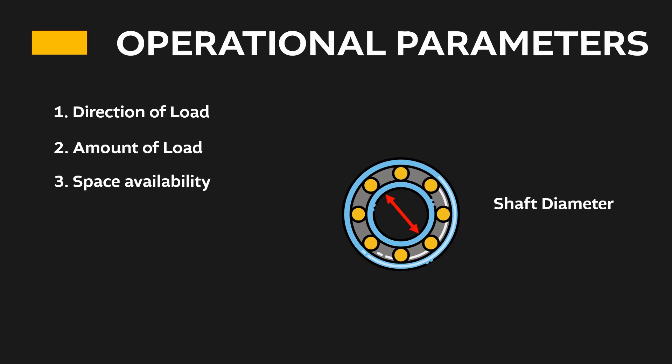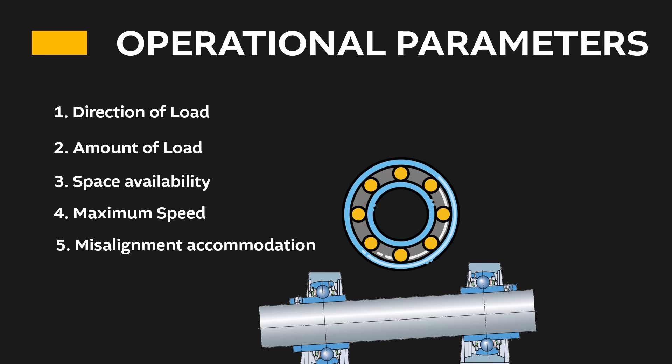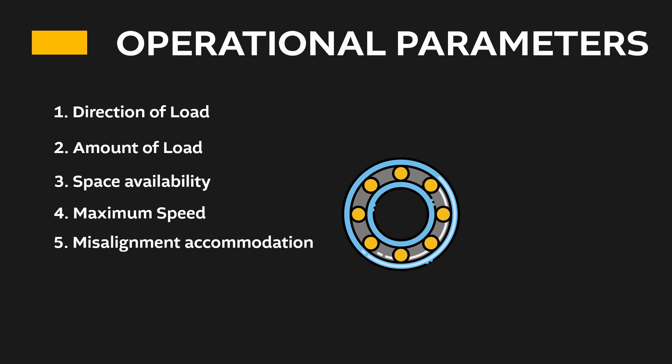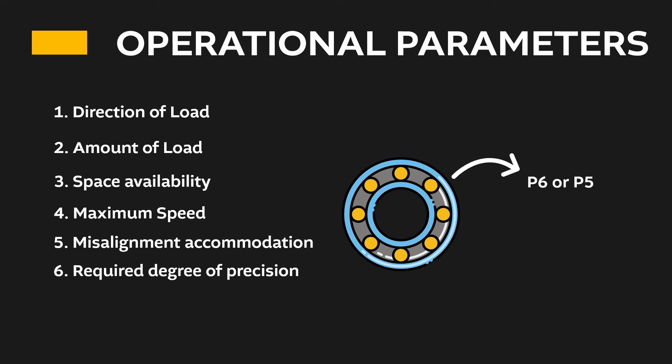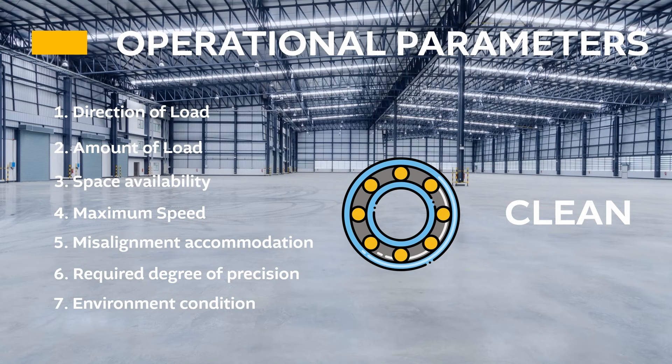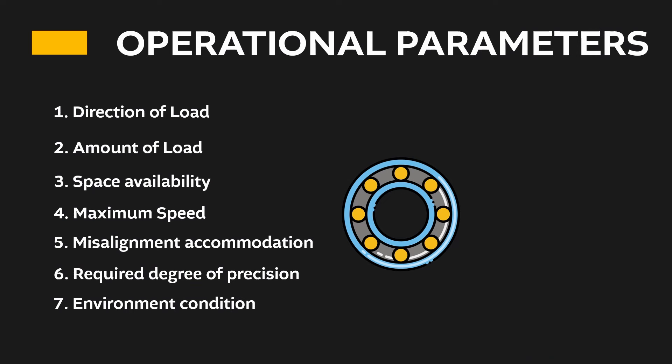Number 4 is how much maximum speed is in the application. Number 5 is whether any misalignment accommodation is needed in the bearing arrangement — if yes, then what kind: axial, angular, or dynamic. Number 6 is the required degree of precision in the application. Last but not least, what is the environment condition — like is it clean, dusty, hot, or underwater? So let's start from how to choose the suitable bearing type as per the direction and amount of load.